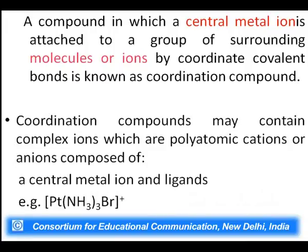A compound in which a central metal is attached to a group of surrounding molecules or ions by coordinate covalent bonds is known as a coordination compound. Coordinate covalent bond differs from a covalent bond in that it is formed by donation of electrons from one species to another, rather than mutual sharing. Once the coordinate covalent bond is formed, it cannot be differentiated from a covalent bond — the difference exists only at the time of bond formation, where electrons are donated by one species but shared by both.